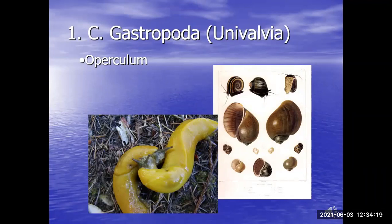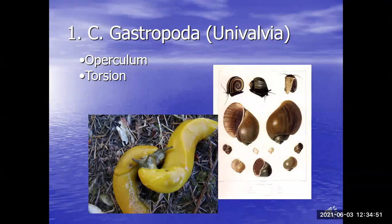From your pre-lab and yesterday's discussion, these organisms are hermaphroditic, which means they're also monecious — they have both male and female reproductive organs. So gastropods are hermaphroditic or monecious.